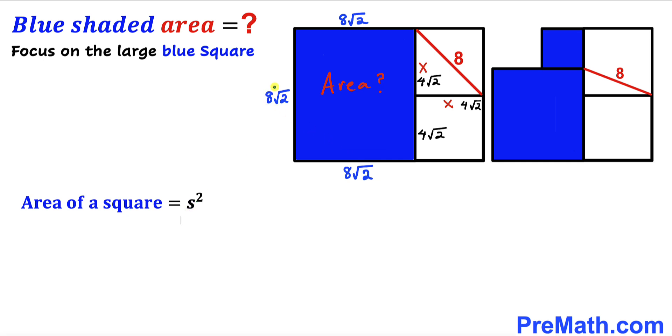In our case, the side length of this blue square is 8√2. Therefore, the area is (8√2)². Simplifying this gives us 128 square units.